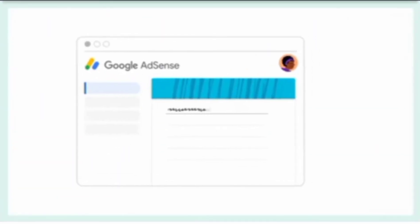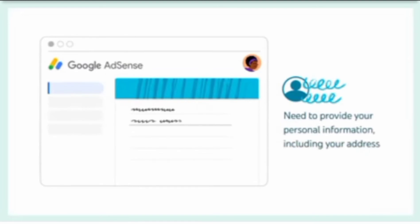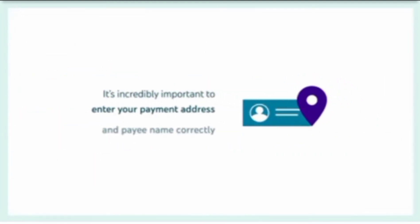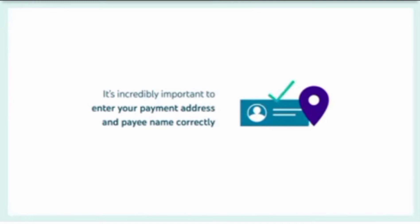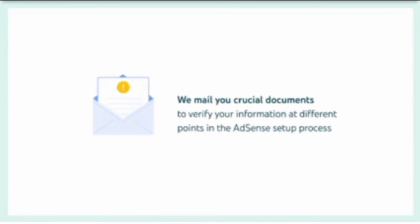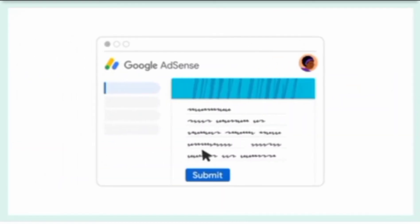It's important you don't attempt to create a new AdSense account if you already have an existing one, because this can cause delays in your application process. Note that you can link multiple channels to a single AdSense account. Once you're in AdSense, if you're setting up a new account, you'll need to provide your personal information, including your address. It's incredibly important to enter your payment address and payee name correctly, because we mail you crucial documents to verify your information at different points in the AdSense setup process. Once everything is entered and you've checked to ensure it's all accurate, you can submit.